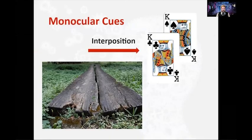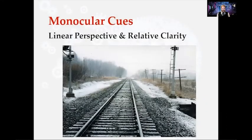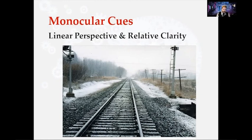Other monocular cues include interposition — when one thing is in front of another, we perceive it as closer. Texture: when things are closer, we see more detail, like when you get close to your face in a mirror and can see all your pores. As you get farther away, things get hazier and fuzzier. Linear perspective and relative clarity: things are clearer the closer they are, and when we look at parallel lines like train tracks or a road going into the distance, they appear to eventually converge — but if you walked down those tracks, you'd know they never fully come together.